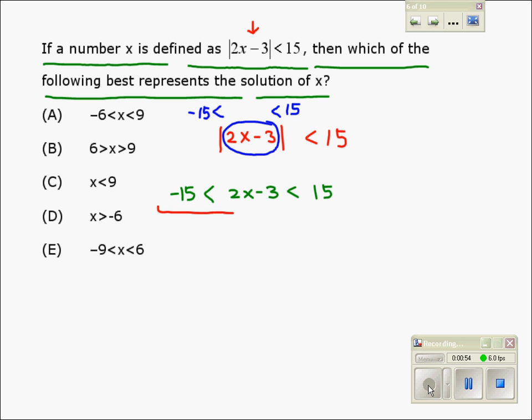Now we can solve this first part, and also solve the other part, and find the value of x. Solving the first part, we write negative 15 is less than 2x minus 3. Now, adding 3 on both sides, we get negative 12 is less than 2x. Dividing both sides by 2, we get negative 6 is less than x.